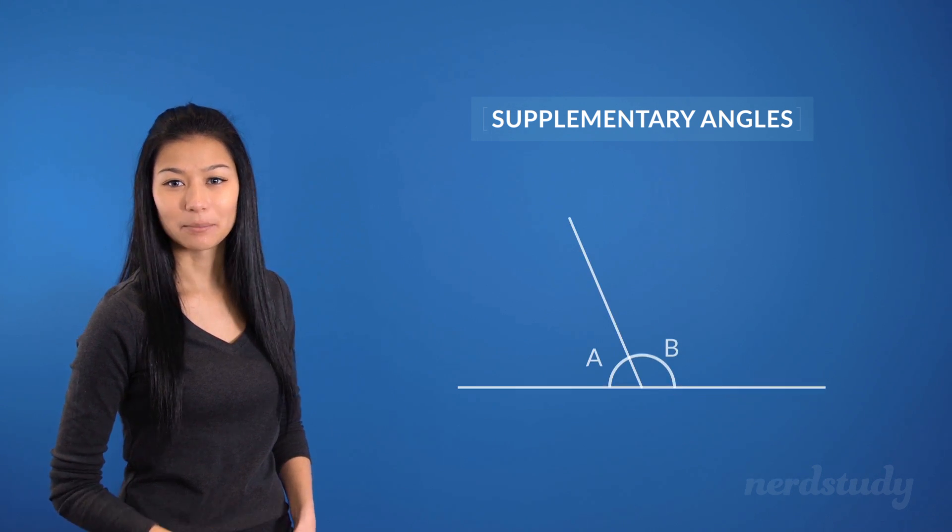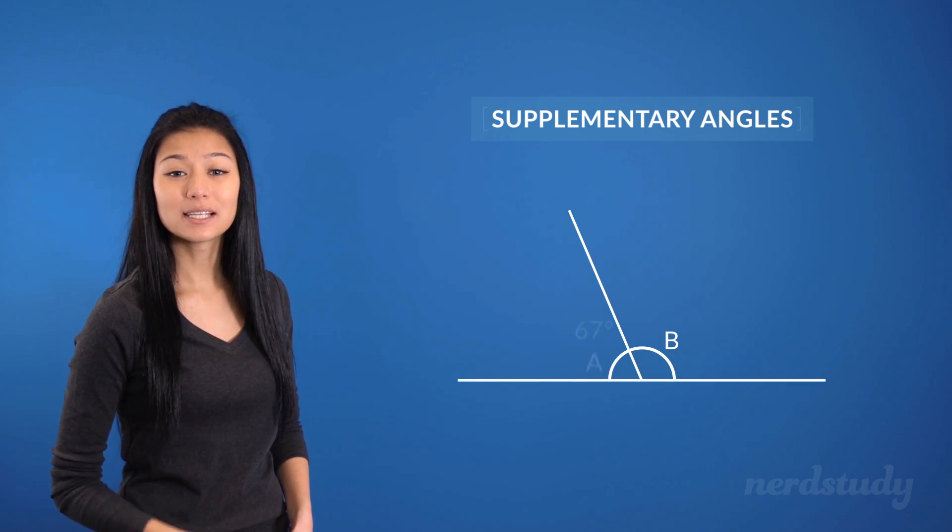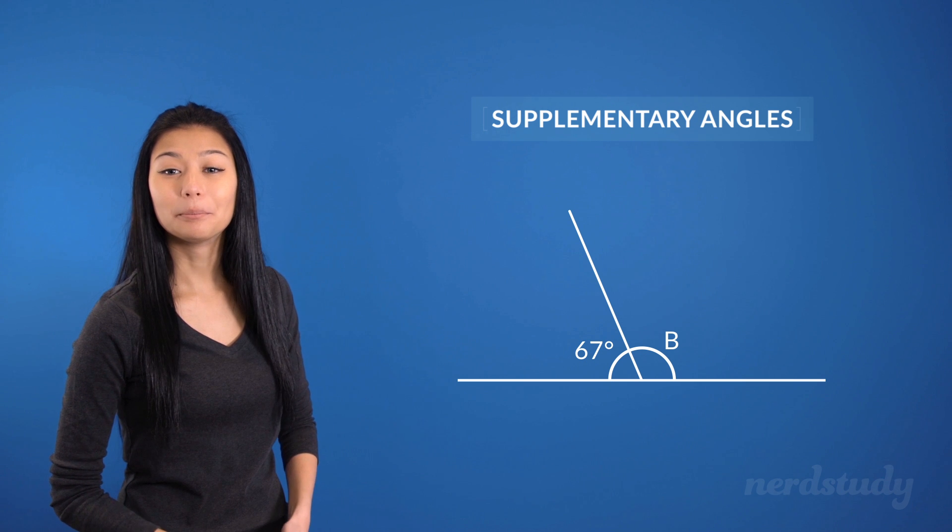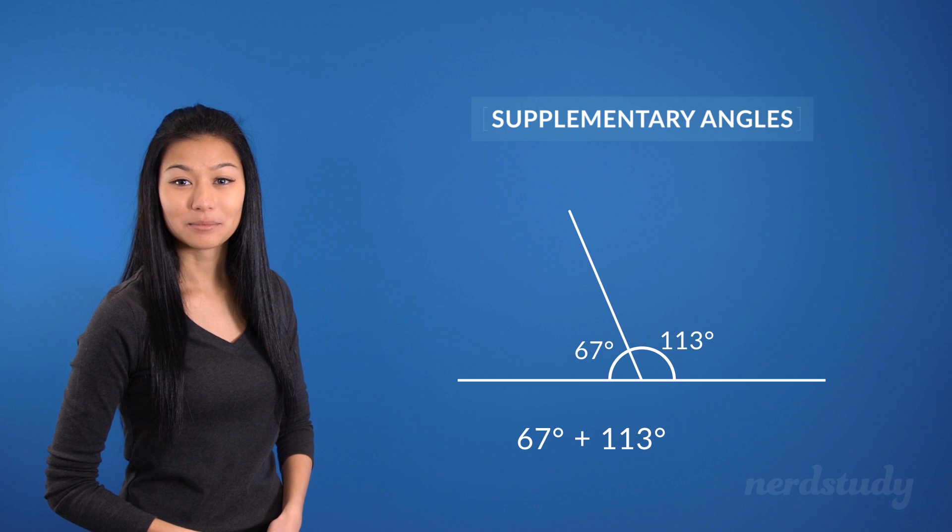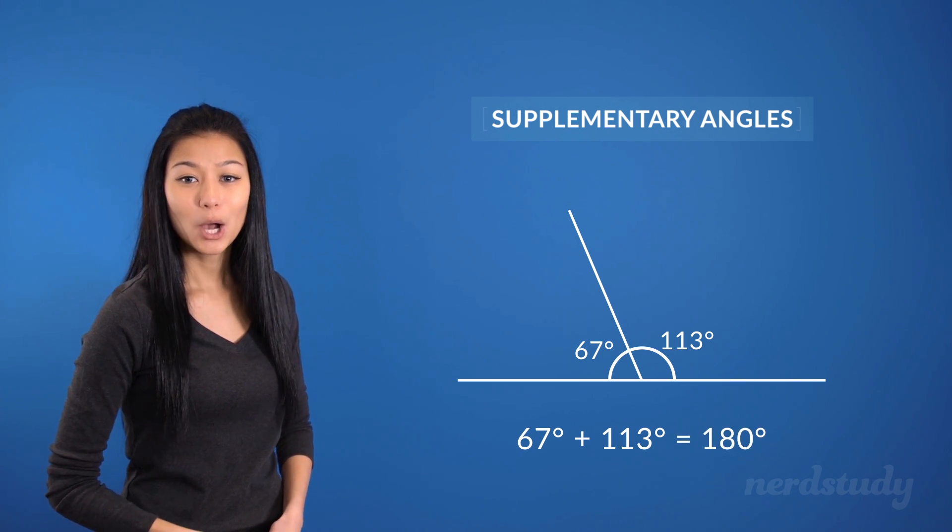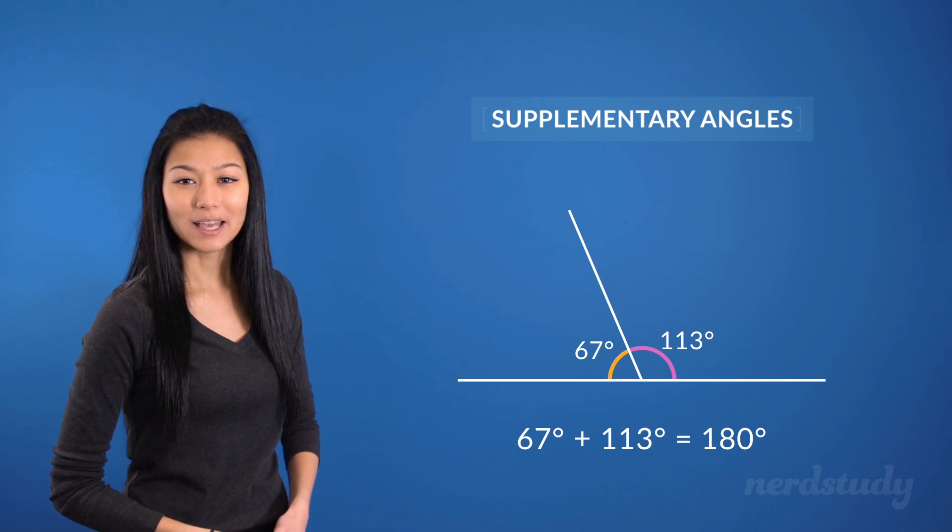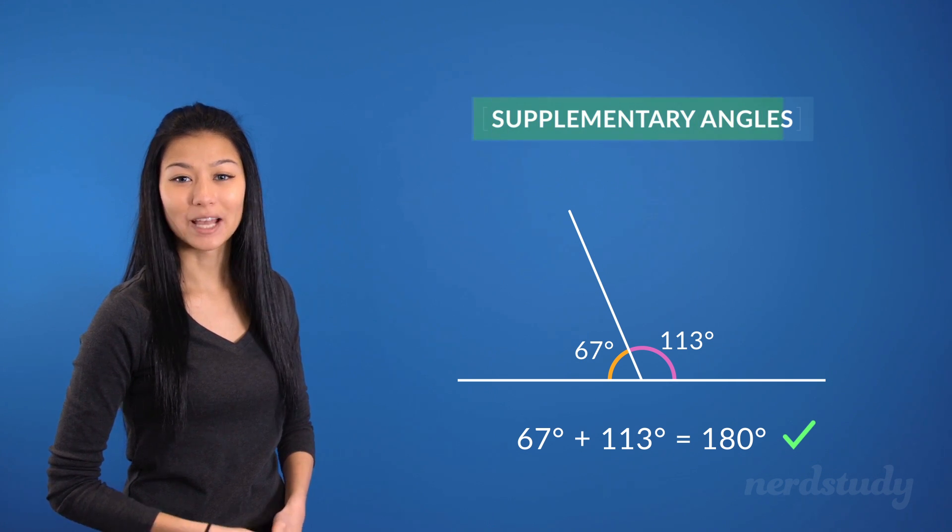So, in this example, angle A is 67 degrees, while angle B is 113 degrees. Since these two angles add up to be 180 degrees, we can say that these two angles are, in fact, supplementary angles.